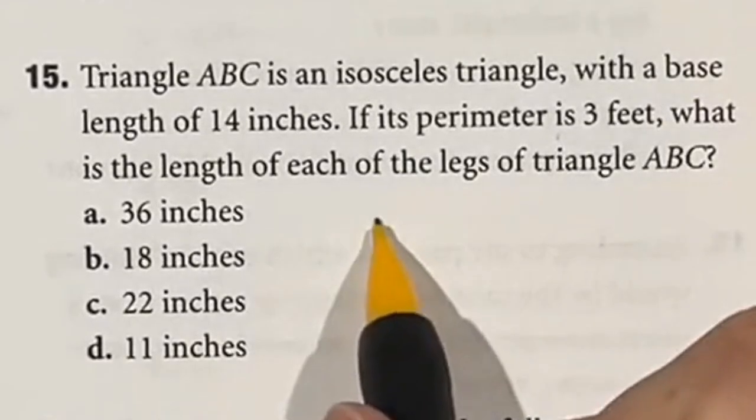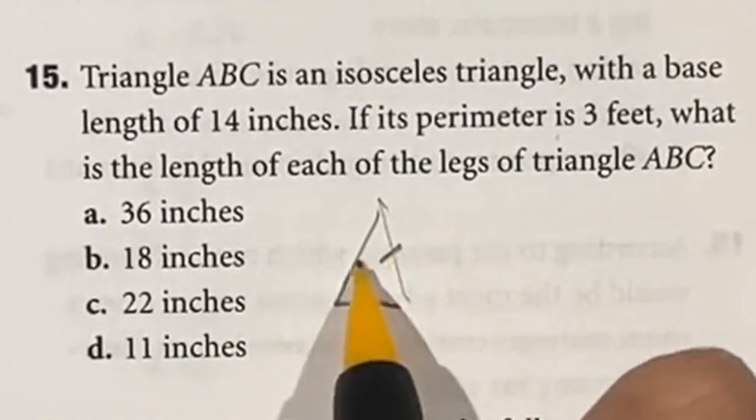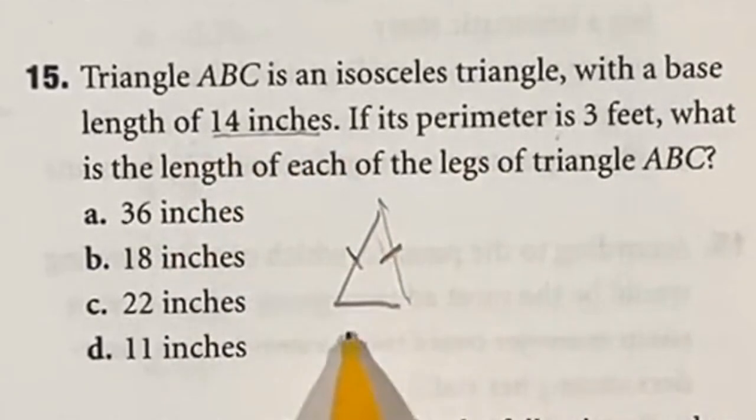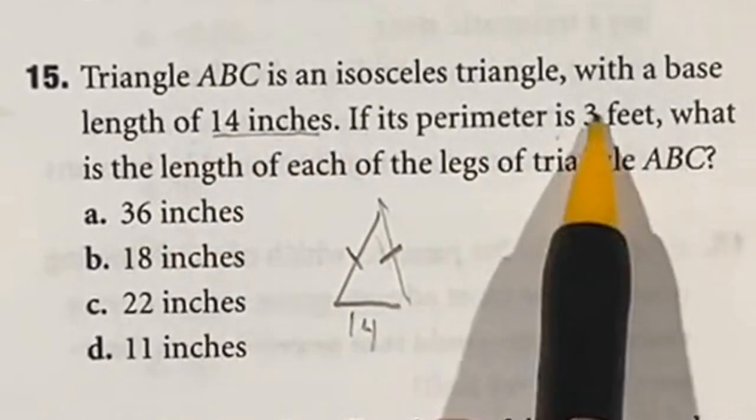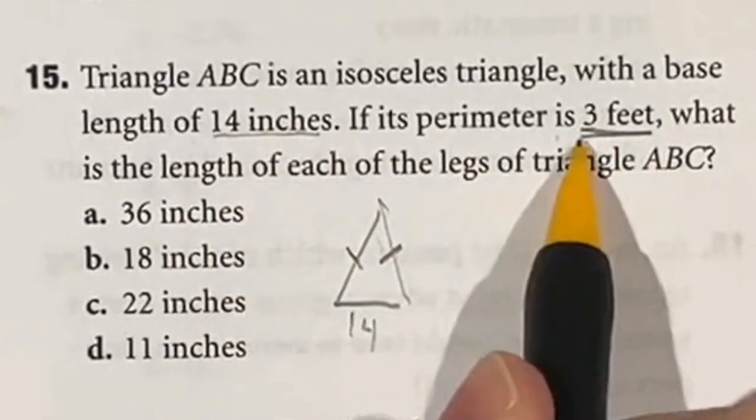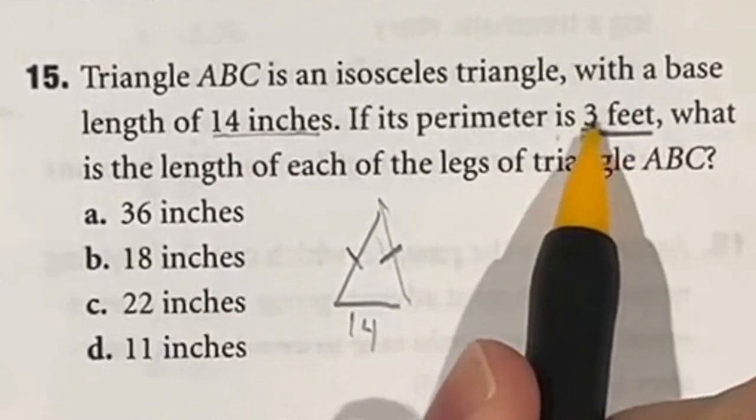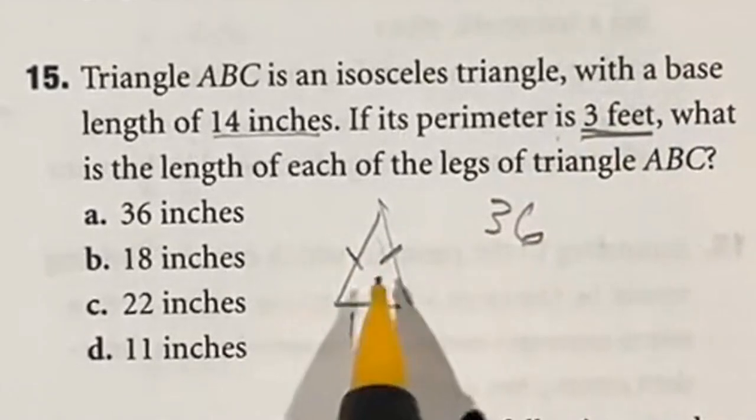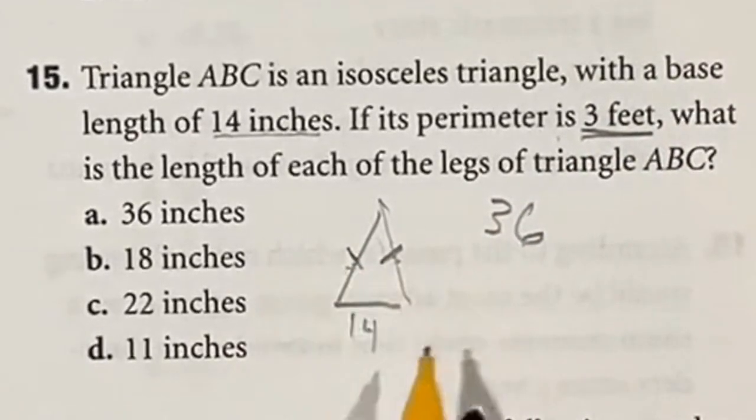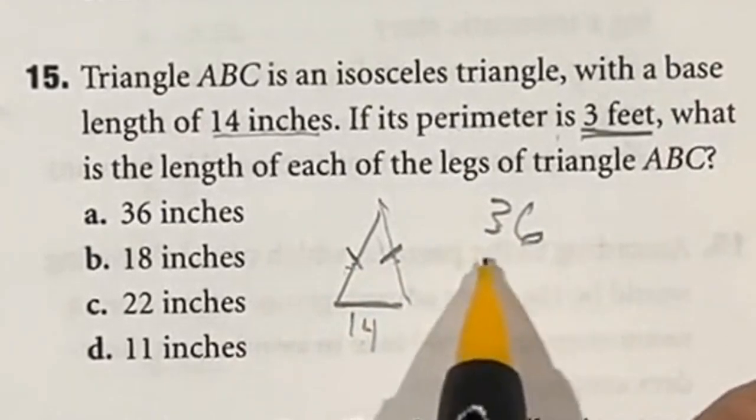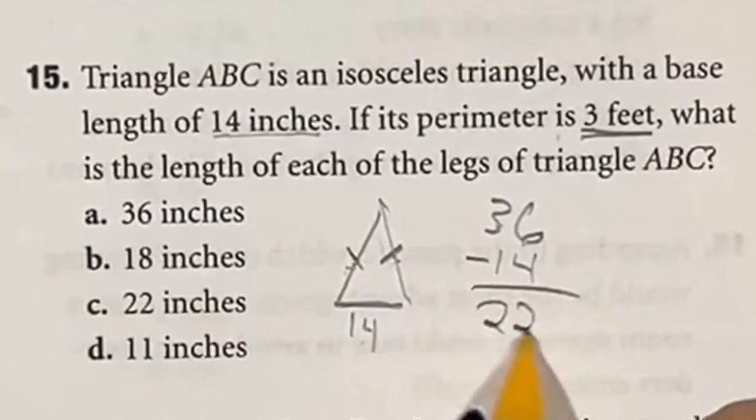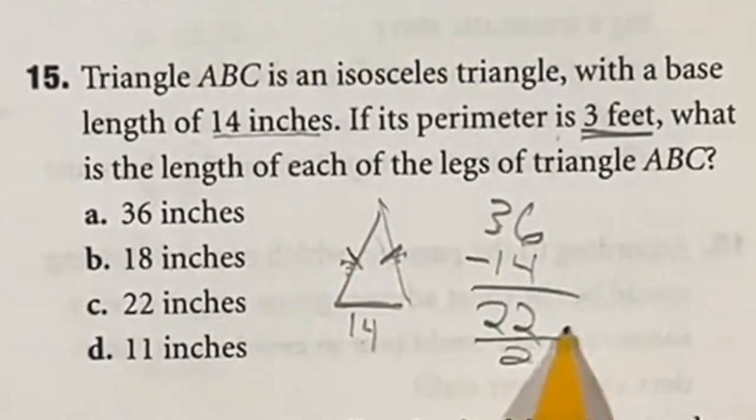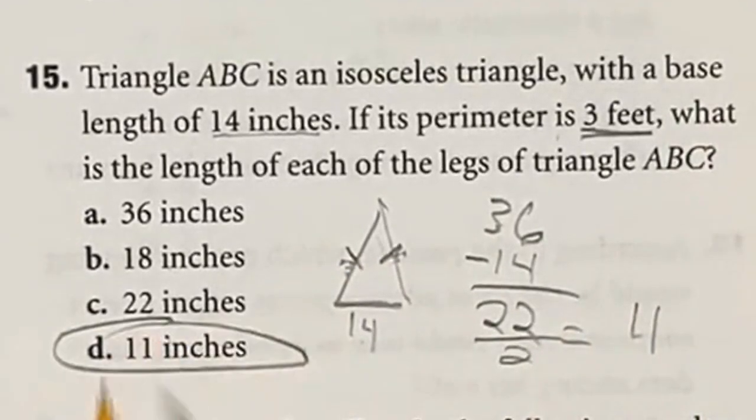In 15 you're given an isosceles triangle which means that two of the sides have to be the same length. It tells us that the base is 14 inches but the whole perimeter is going to be 3 feet. Now first off this is in inches so let's switch this to inches. There's 12 inches in a foot so if there's 3 feet I'm just going to do 3 times 12 to give me a total of 36. Now we need to find how long each of these legs are. Well 14 is the base so I'm going to do 36 minus that 14 to give me 22 left over. And we know two of these are the same so we can just divide this by two to tell me that each one of those is equal to 11 inches which is answer D.